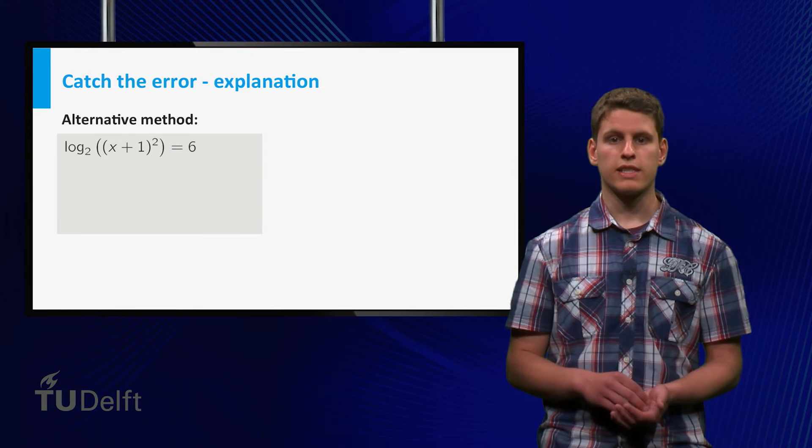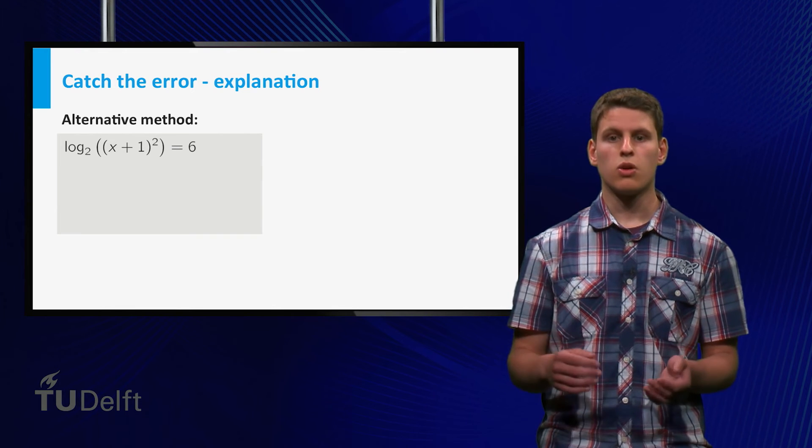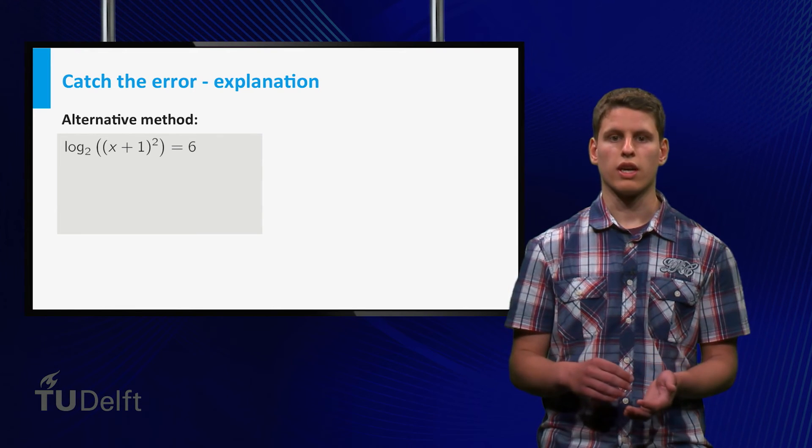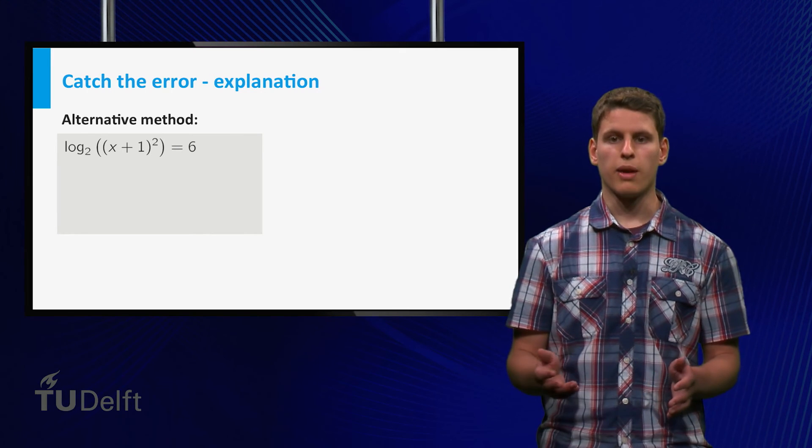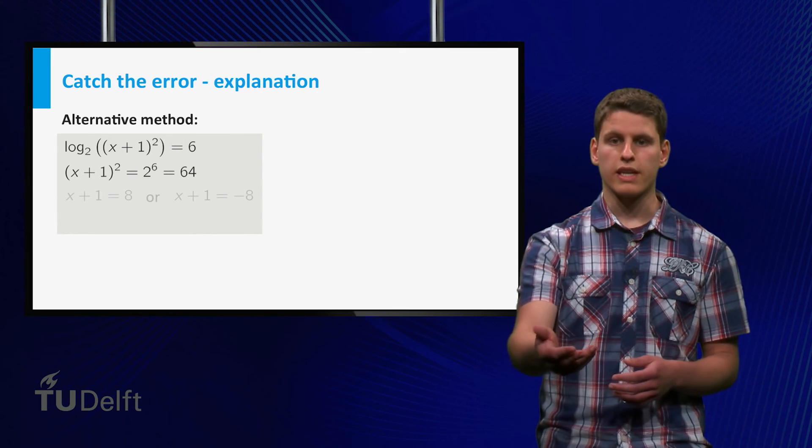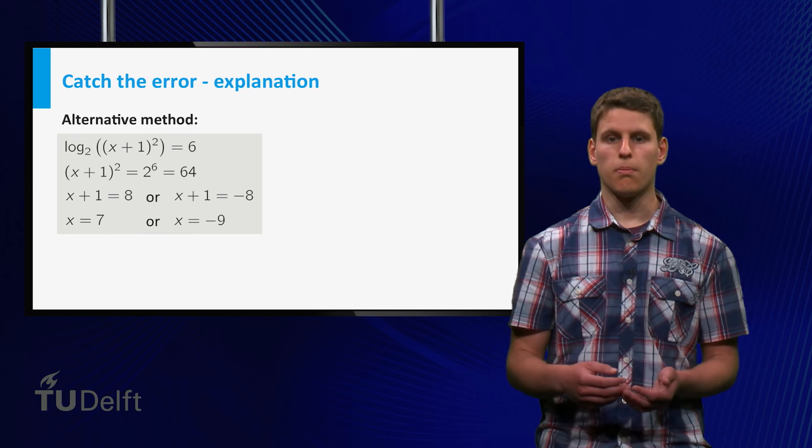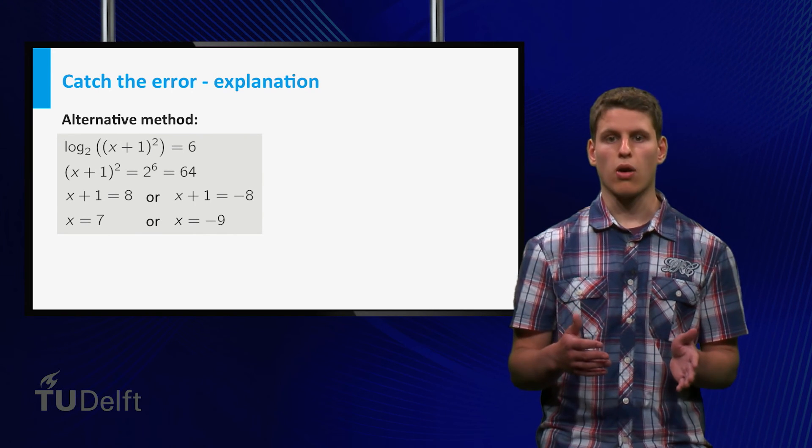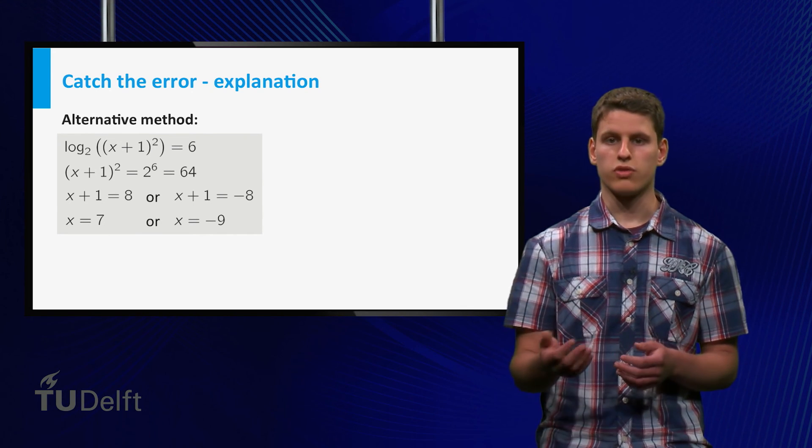In this particular case we could have solved the equation without using one of the rules of calculation for logarithms. Namely, we could directly say that (x+1)² must be equal to 2⁶, and then solve the equation.